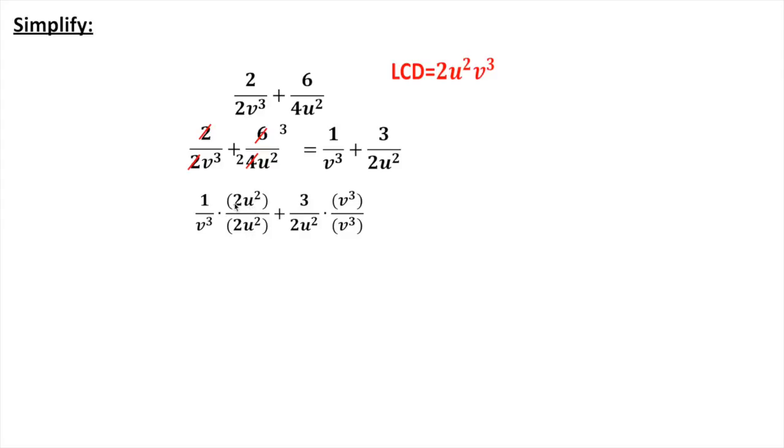I'm not changing the value because I'm essentially multiplying this by 1. 2u squared over 2u squared is just 1. So that will give me the same denominator here. Now on this second one, the second part I should say, 2u squared, well, according to my lowest common denominator, the only thing I'm missing is this v cubed. So I'm going to multiply top and bottom by that v cubed.